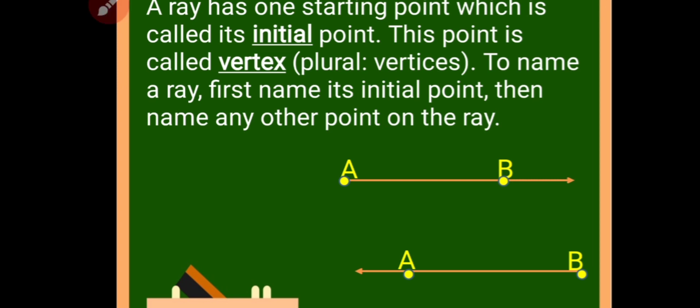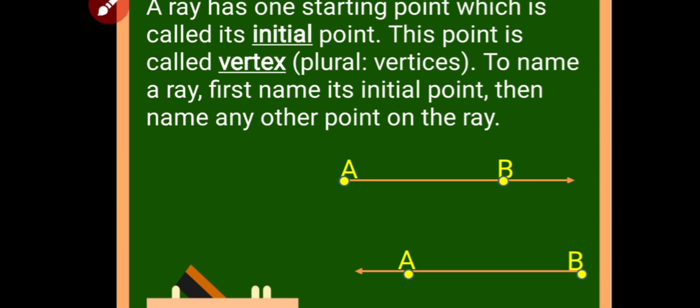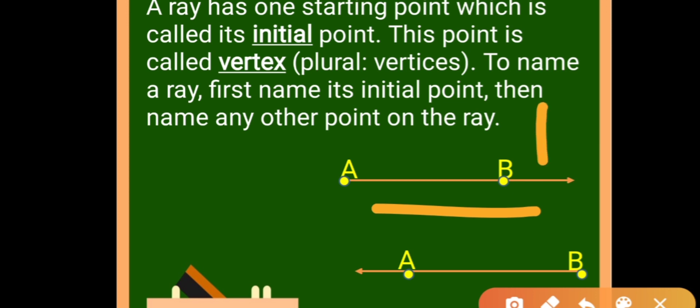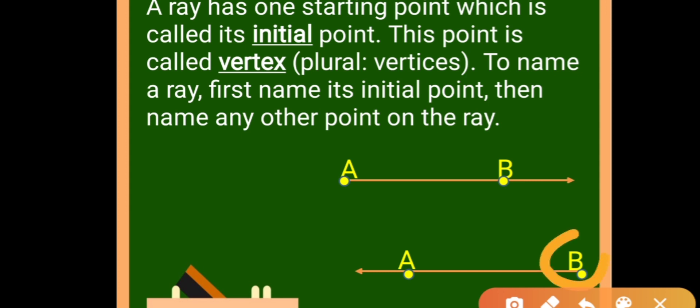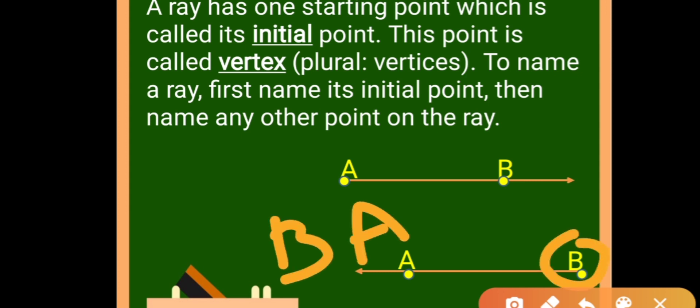A ray has one starting point which is called its initial point, and this point is called a vertex. To name a ray, first name its initial point. If I want to name this ray, its name will be ray AB — the arrowhead shows the ray is going in the direction of B. For the second ray, the initial point is B, so its name is ray BA, with the arrowhead going in the direction of A.